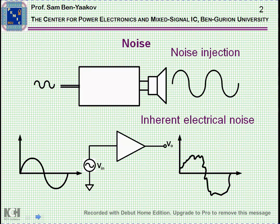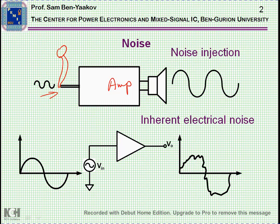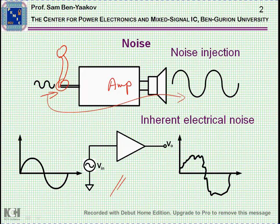Let me first define what we mean by electrical noise. If we have an amplifier with a microphone connected to it, and there is some noise introduced due to bad shielding of the cable, that noise coming out at the output is not electrical noise — it is just interference. What we mean by noise is when a signal comes into an amplifier and at the output, added to the original signal, is some interference generated within the amplifier itself. That is the inherent electrical noise we are talking about.